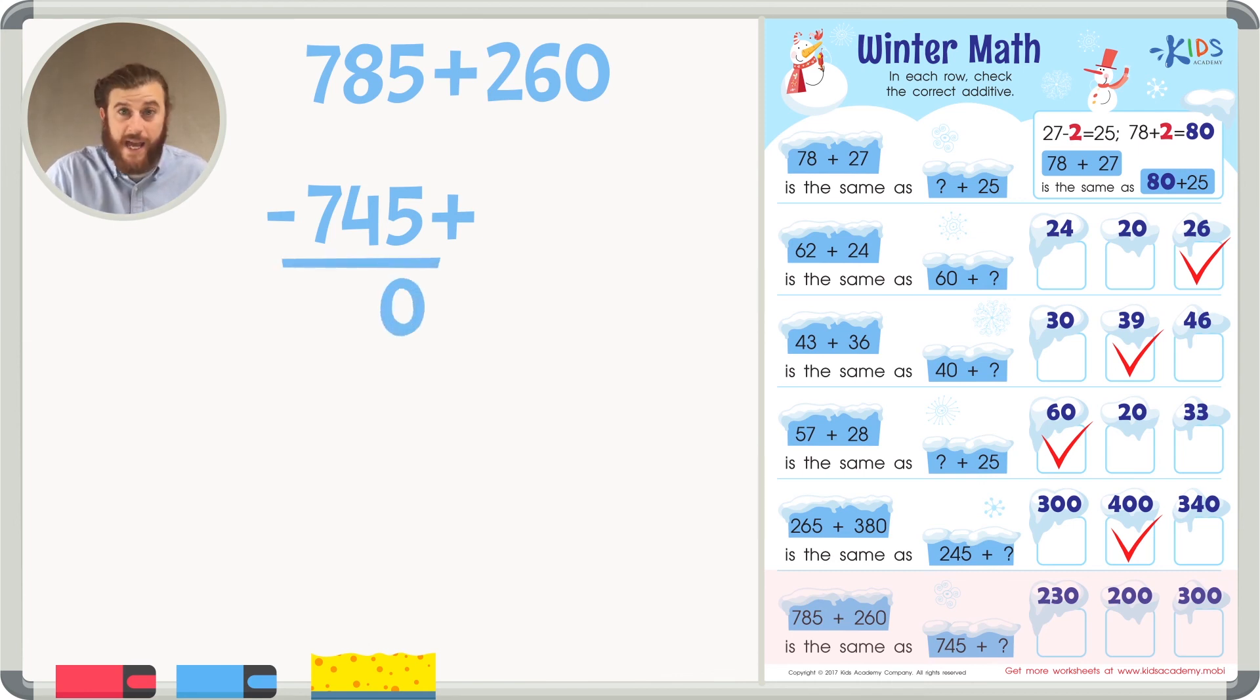5 minus 5 is 0. 8 minus 4 is 4. And 7 minus 7 is 0. So we know that it's 40 more. So if we took away 40 from this side of the equation, we're going to have to add 40 to this side of the equation. 0 plus 0 is 0. 6 plus 4 is a 10, which is 0 in the tens place. Carry the 1 to the hundreds place. And 2 plus 1 is 3. So in this problem, we now have 745 plus 300, making the missing additive 300.